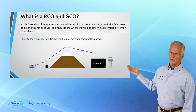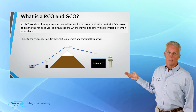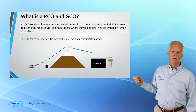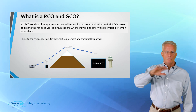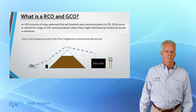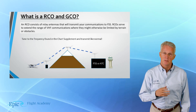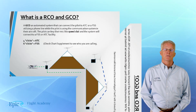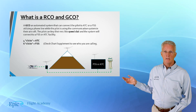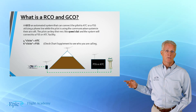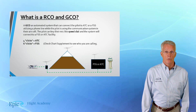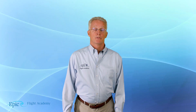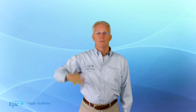RCO stands for Remote Communications Outlet — a communications outlet through radio waves. You tune to the frequency found in the chart supplement and transmit as you normally would. GCO stands for Ground Communications Outlet — an automated system connecting the pilot to ATC or flight service utilizing a phone line. Review these in detail with your flight instructor. That pretty well outlines what an IFR clearance is, who to call, and how to pick it up. Join us next time.